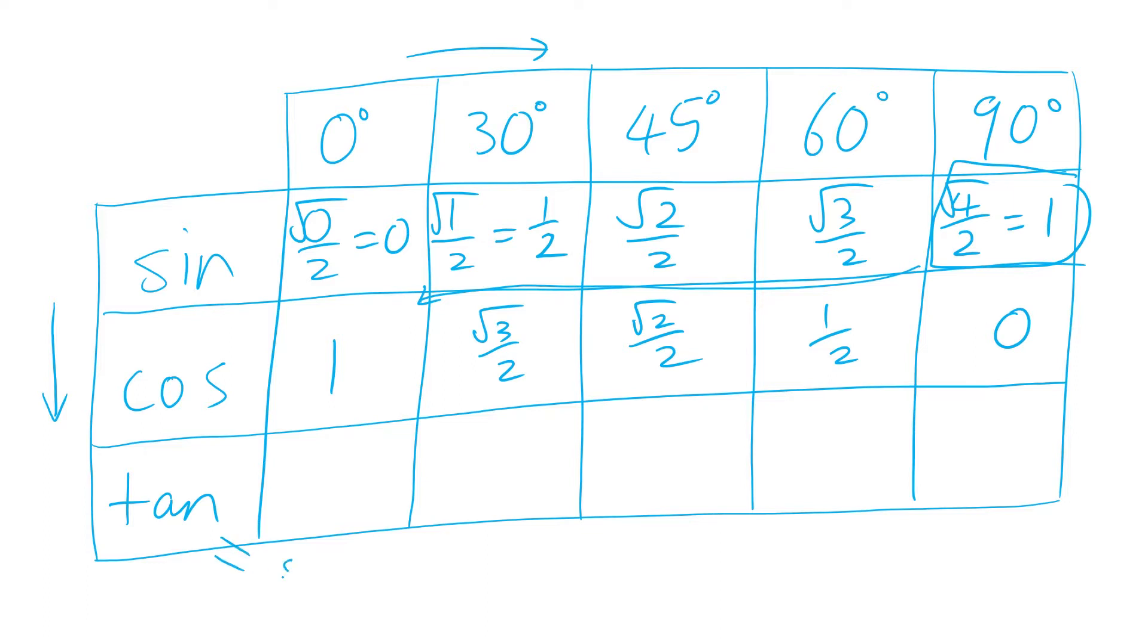Now tan is equal to sin over cos, so basically you take whatever's in the top box, divide it by whatever's in the second box, and you've got your value for tan. So all the tan values are as follows.